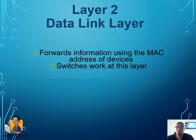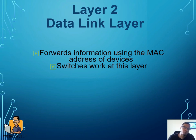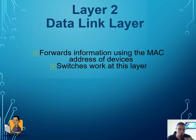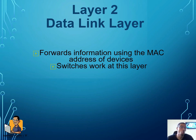Layer two is where switches work. Switches are inside your LAN, while routers get you outside of your LAN and onto other networks. Routers use IP addresses to forward information; switches use MAC addresses to forward information to the next destination. A MAC address is the physical address of a device — your IP address is your logical address on the network, and your MAC address is your physical address.